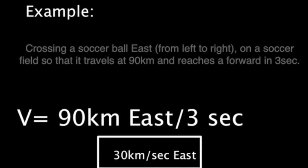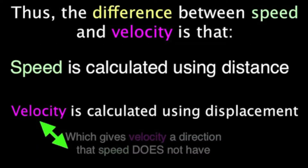For example, crossing a soccer ball east from left to right on a soccer field so that it travels at 90 kilometers and reaches a forward in 3 seconds. We calculate the velocity using the equation: velocity is equal to displacement over time. Therefore, velocity is equal to 90 kilometers east divided by 3 seconds, giving a total of 30 kilometers per second east. The difference between speed and velocity is that velocity is calculated using displacement, which gives it a direction that speed does not have.